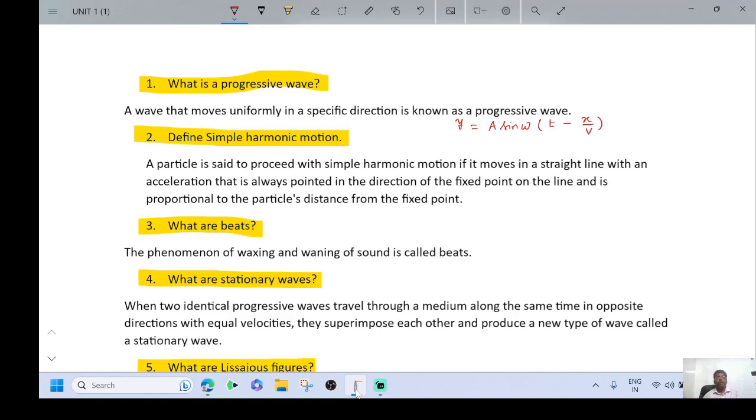See the second question: Define simple harmonic motion. A particle is said to proceed with simple harmonic motion if it moves in a straight line with an acceleration that is always pointed in the direction of the fixed point on the line and is proportional to the particle's displacement from the fixed point.